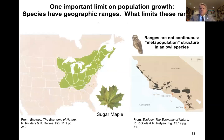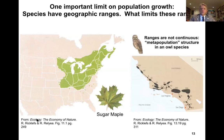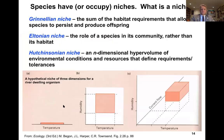One important aspect of population growth is that species have finite geographic ranges. Not all species are distributed everywhere. The fact that these geographic ranges are limited imposes a constraint on population growth. So what limits geographic ranges?